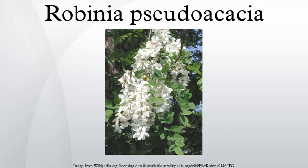Wood: pale yellowish-brown, heavy, hard, strong, close-grained and very durable in contact with the ground. The wood has a specific gravity of 0.7333, and a weight of approximately 45.7 pounds per cubic foot. Winter buds: minute, naked, three or four together, protected in a depression by a scale-like covering lined on the inner surface with a thick coat of tomentum and opening in early spring. When forming, are covered by the swollen base of the petiole.